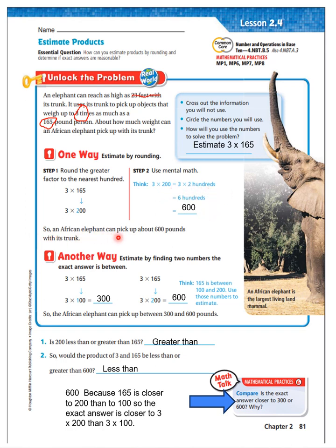There's another way to estimate: by finding two numbers the exact answer is between. We know 165 is between 100 and 200. Three times 100 is 300, and three times 200 is 600. So an African elephant can pick up between 300 and 600 pounds. We used those boundary numbers to estimate.